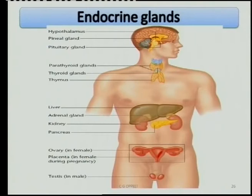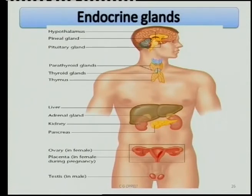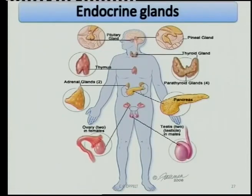There are many endocrine glands you need to know. Go and look in your textbook. You must know the name of each hormone, the gland that secretes it, the function of the hormone, and what happens with too much or too little — often referred to as over secretion and under secretion.